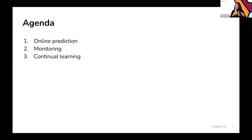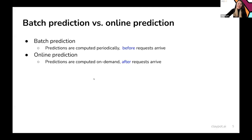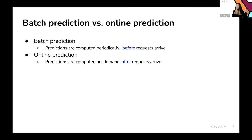I know I have an accent so sometimes I speak really fast — feel free to tell me to slow down. The first topic is online predictions. I believe at this point a lot of people are familiar with the discussions between batch predictions and online predictions. Batch prediction is when predictions are computed periodically, like maybe once a day, before requests arrive.